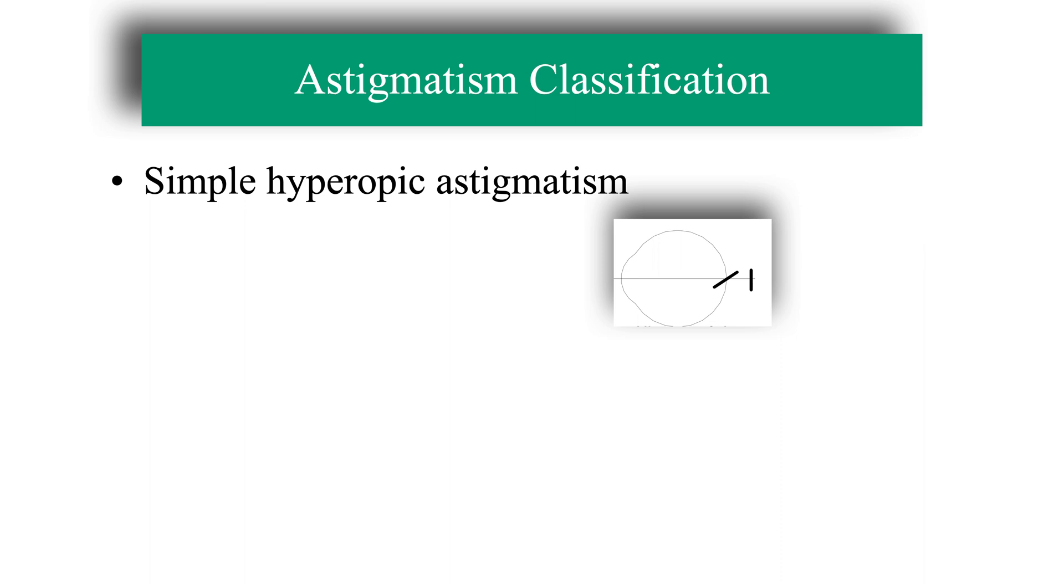On the other hand, ocular astigmatisms are normally classified according to the position of the retina in relation to the focal lines of the refractive beam, when the unaccommodating eye observes a distant point. In these cases, there are five possible types of astigmatism.